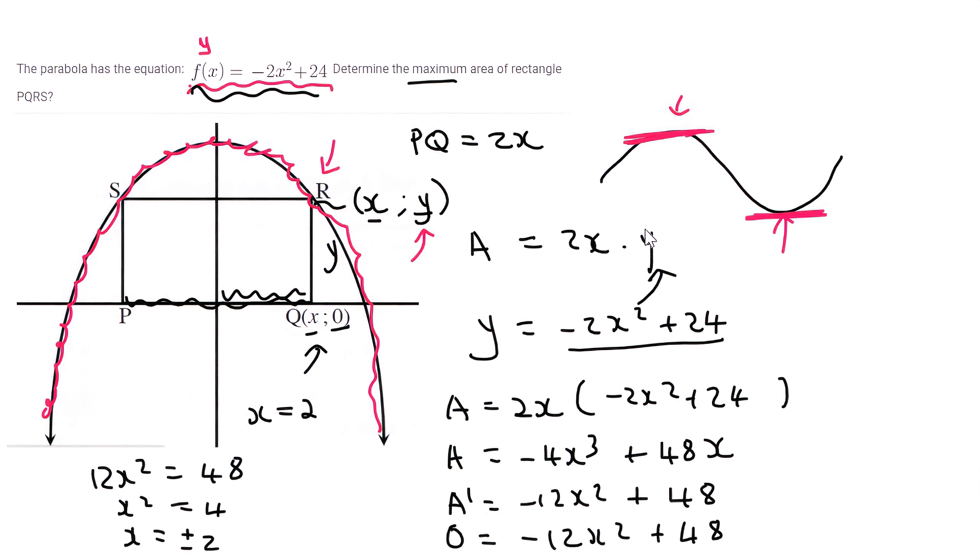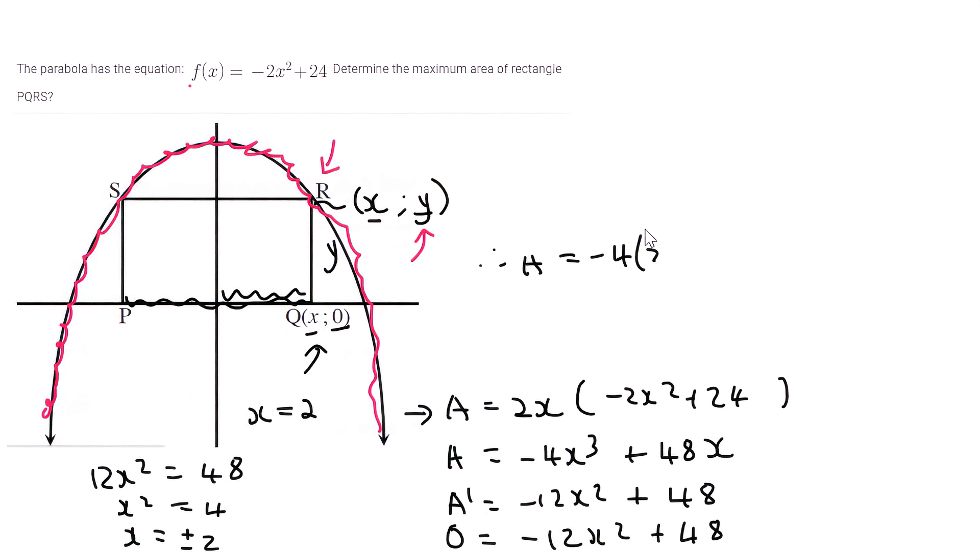So we've found the x value, but now look what the question says. Sometimes the question only wants the x value, but in this one they say determine the maximum area. So what we can do is we can plug that x equals 2 back into this equation or this one. It doesn't really matter. And so then we can say therefore area is going to be minus 4 in bracket 2 to power 3 plus 48 times 2. And that's going to give it 64. So that is the maximum area.